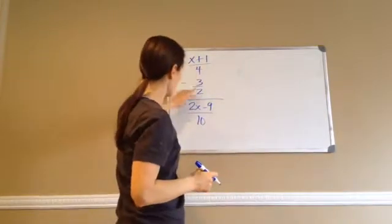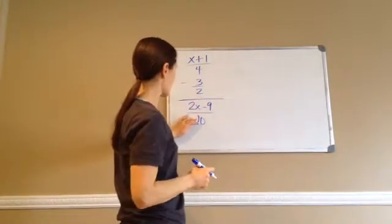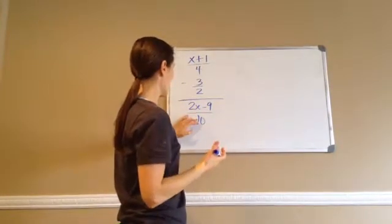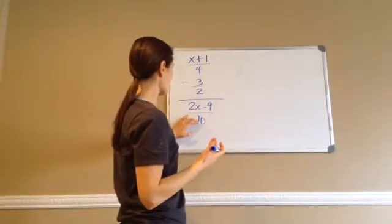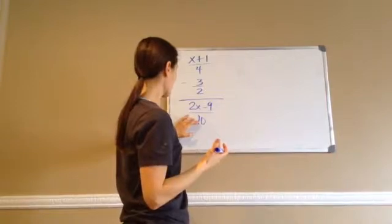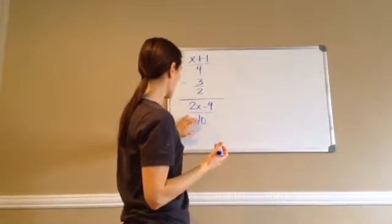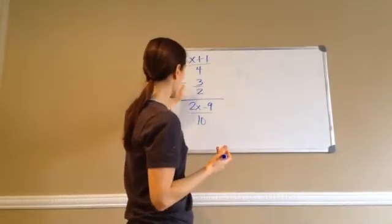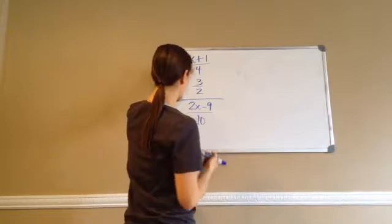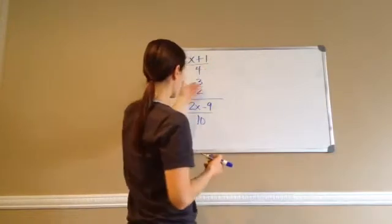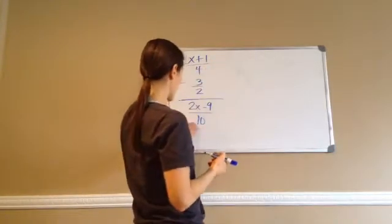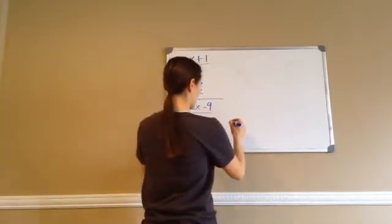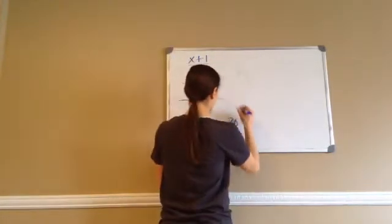Now, 4, 2, and 10. 4 times 2 is 8 — no, that won't work. Let's try 20, because I know 4 will go into 20, 2 will go into 20, and 10 will go into 20. So that's what I'm going to do — 20 is our common denominator.